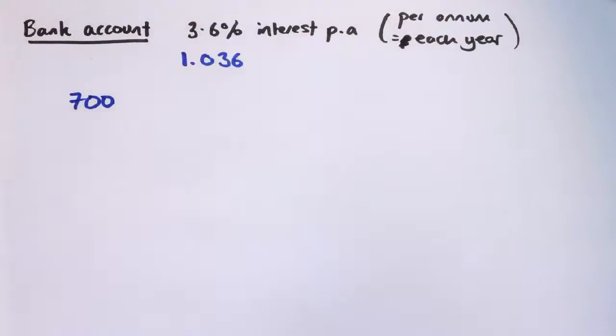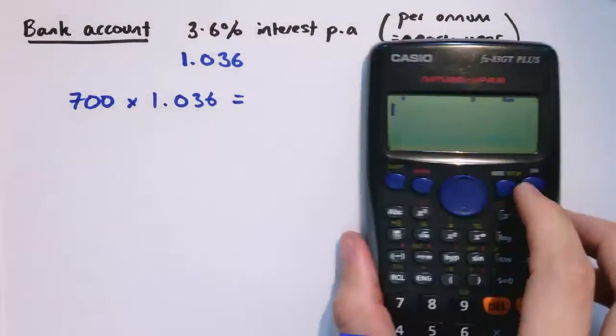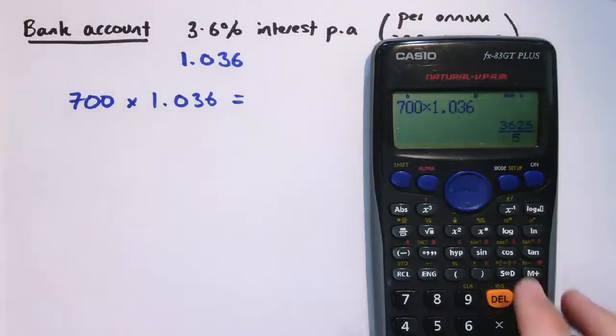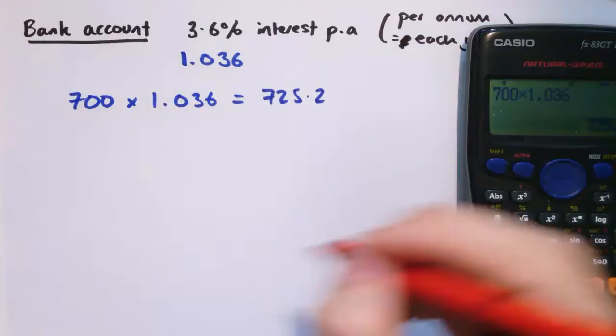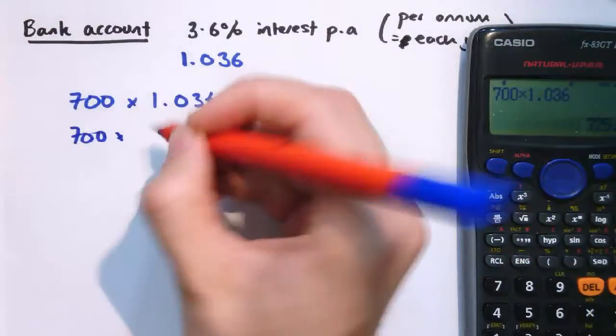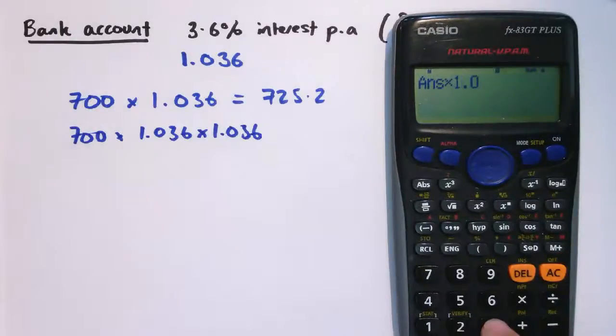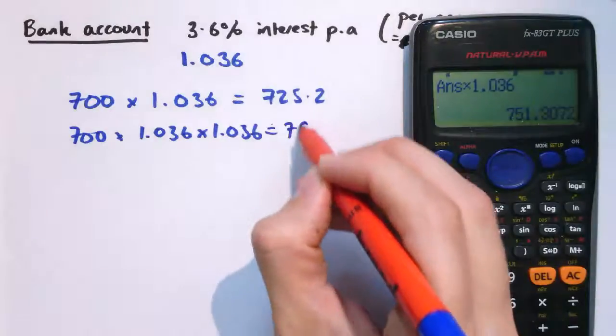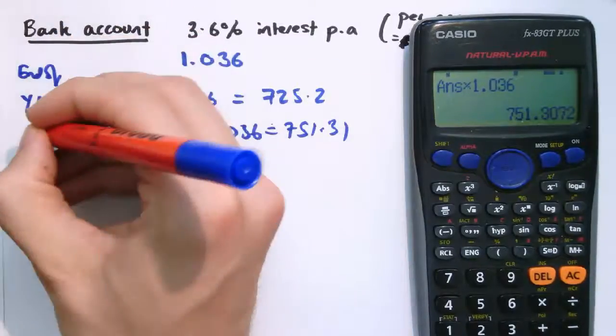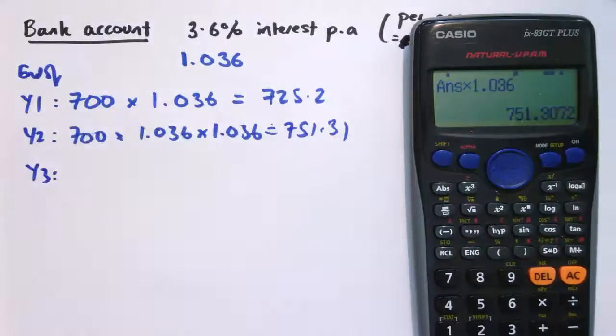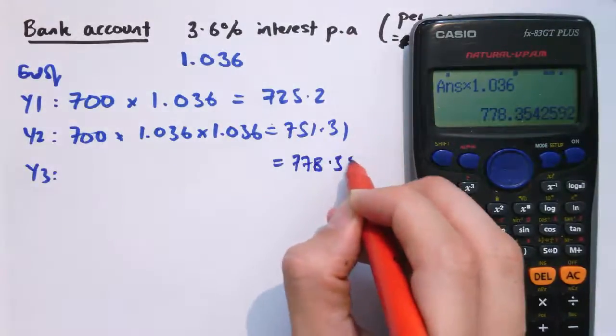So let's say I started with 700 pounds, then at the end of the first year I would have 700 times 1.036, which would give me 725 pounds and 20 pence. At the end of the second year, I'd have that amount times 1.036, which is the same as saying it would be times 1.036 times 1.036, so I just multiply by 1.036 again, so I'd now have 751 pounds 31 approximately. This is the end of year 1, year 2, and at the end of year 3, I could keep going, times 1.036 again, I'd have 778 pounds and 35 pence.